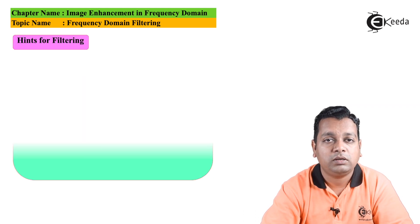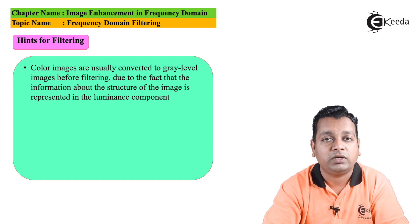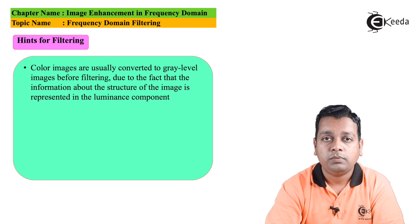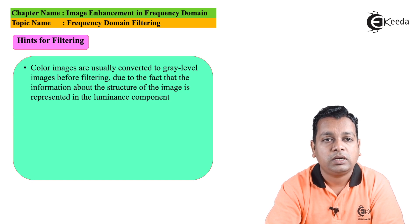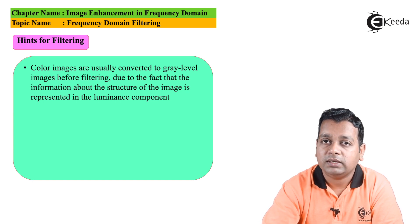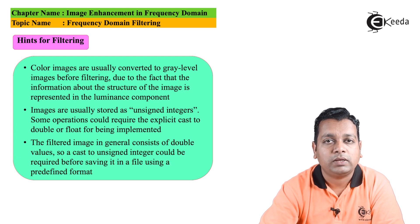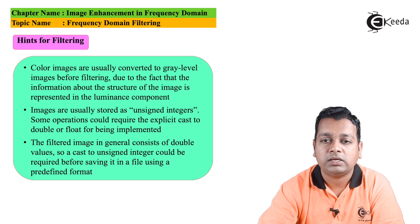Now we have some hints for filtering. First, if you are working with color images, these are usually converted to grayscale images before filtering, because the information about the structure of the image is represented in the luminance component — meaning the intensity component. Intensities are preserved as we switch from color to grayscale. Images are usually stored as unsigned integers, so some operations may require an explicit cast to double or float. Lastly, the filtered image in general consists of double values, so a cast to unsigned integer may be required before saving in a predefined file format.